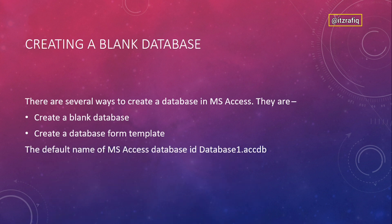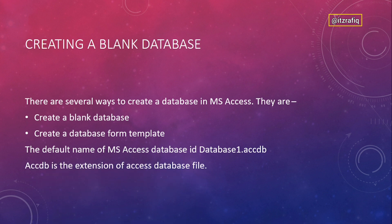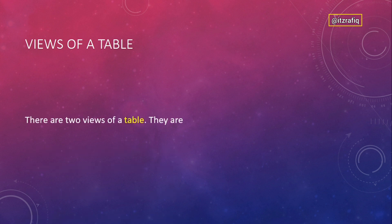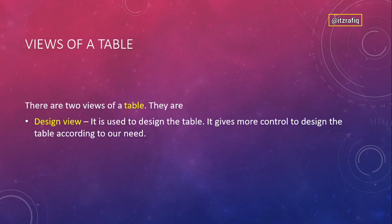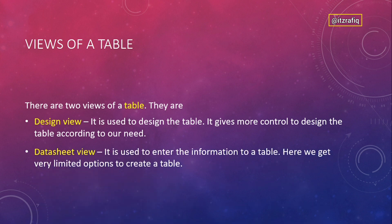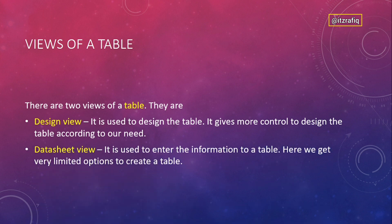The default name of an MS Access database is always 'Database1.accdb.' If you have already created many databases, it may be Database2, Database3, and so on. The extension 'accdb' is the file extension for Access databases. There are two types of views for a table: Design View, used to design the table structure, and Datasheet View, used to enter information into the table.